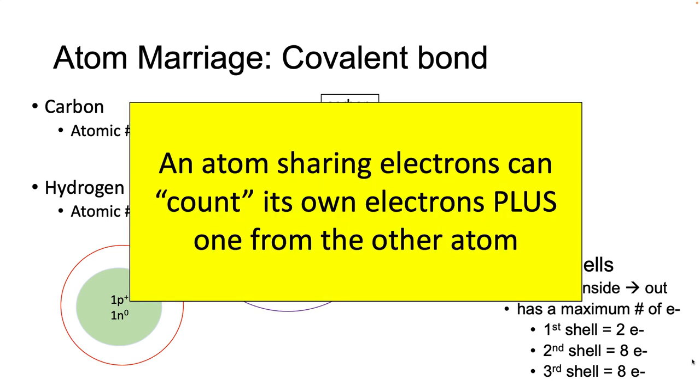When this happens, each atom can count not only its own electrons, but it can also count the shared electron, or maybe two or three electrons, from the other atom.